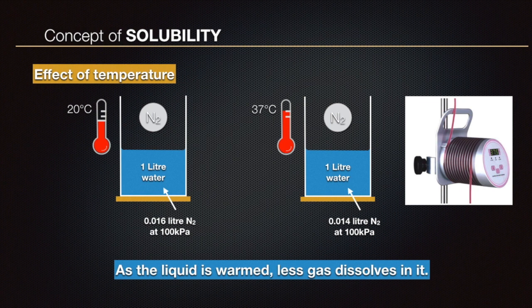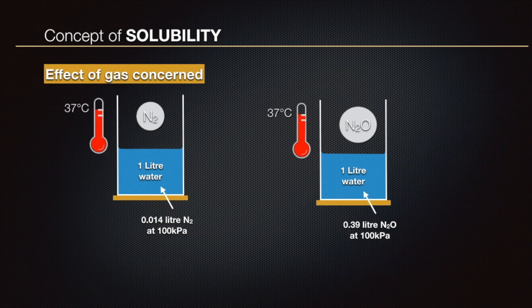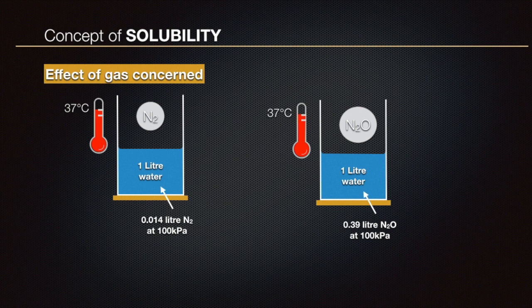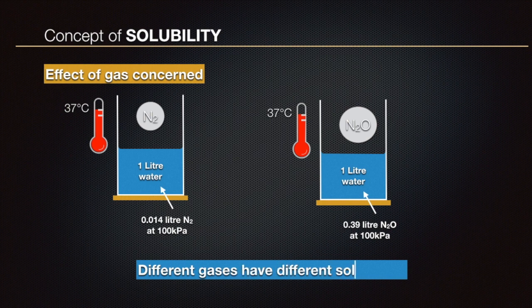Now consider what happens if a gas other than nitrogen is used. The measuring cylinder on the left contains one liter of water in an atmosphere of nitrogen, and on the right there is a similar cylinder in an atmosphere of nitrous oxide. At equilibrium, there is considerably more nitrous oxide dissolved in the liter of water than nitrogen — 390 ml of nitrous oxide versus 14 ml of nitrogen. So different gases are found to have different solubilities.